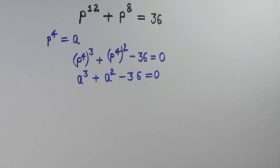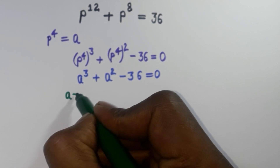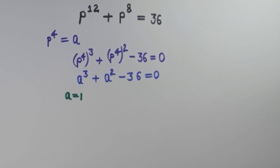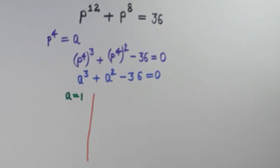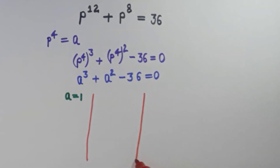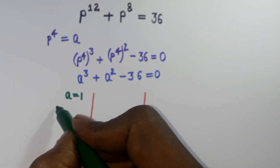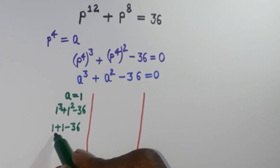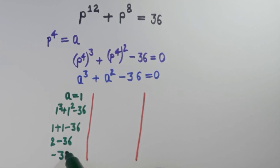We have to find the value for a so that this equation can be satisfied. We will apply the hit and trial method to get the value for a. Starting from a equal to 1: putting a equal to 1 gives 1 cubed plus 1 squared minus 36, which is 1 plus 1 minus 36, that is minus 34. That is not equal to 0, so we will neglect it.